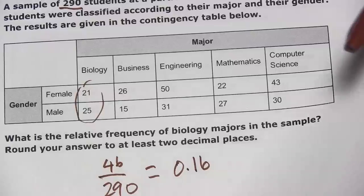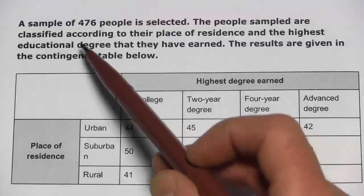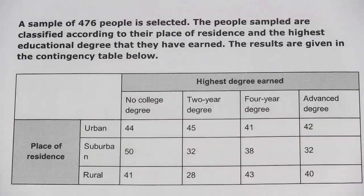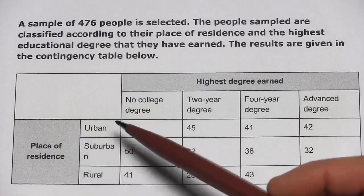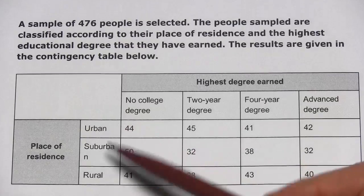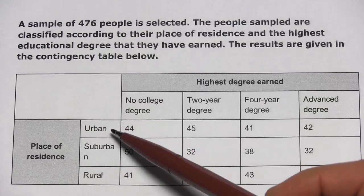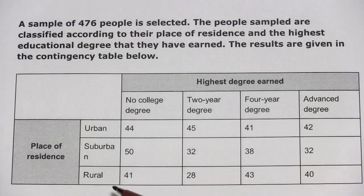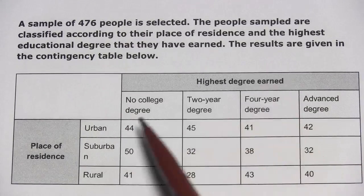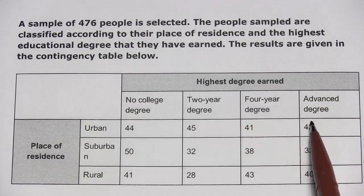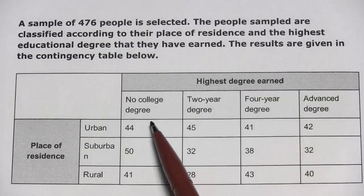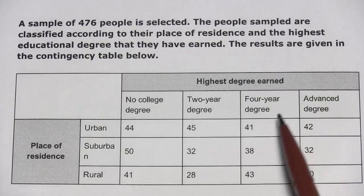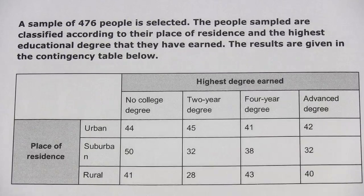Let's try another one like this. In this one, we have a sample of 476 people, and they are broken down by their place of residence — urban, suburban, and rural — and by the highest degree they earn in college: no college, two-year, four-year, or advanced degree.